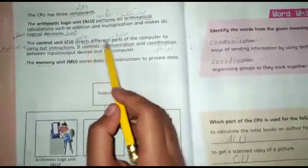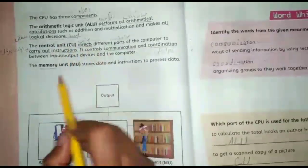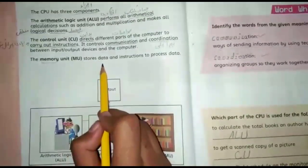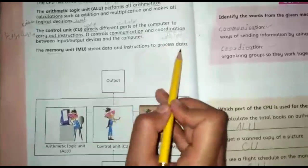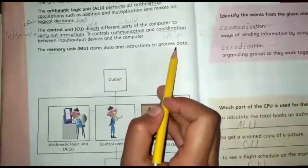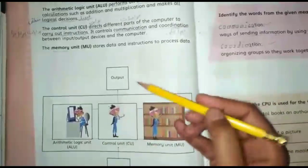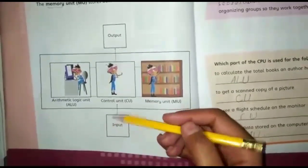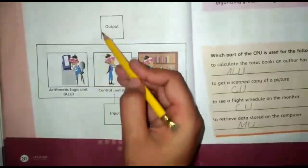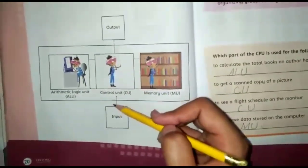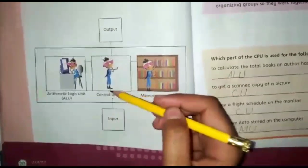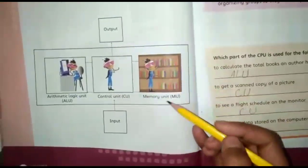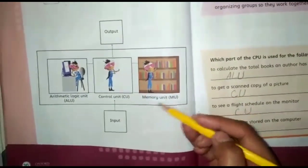Next is the Memory Unit. The Memory Unit stores data and instructions so that data can be processed. It sits between input and output — if we give calculations, the ALU performs them; if we store something, the memory unit holds it until needed for output.